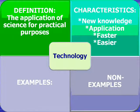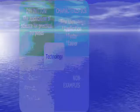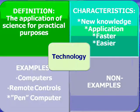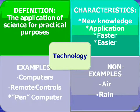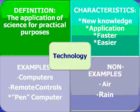Some characteristics of technology: it usually comes from new knowledge that we've discovered. It's the application of science — taking science and applying it so it can help us in the real world. Technology always makes things faster and easier. Examples include computers, remote controls, and a pen computer. Non-examples would be air, rain, trees, and soil — things that were already here and things that are not man-made.